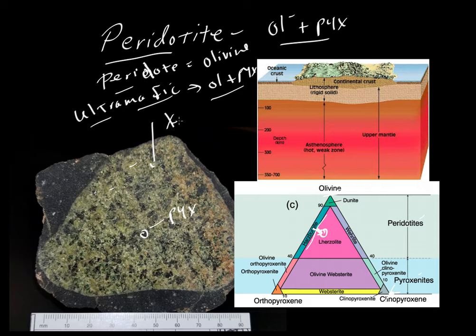Now, I'm calling it a xenolith. This is a foreign rock. Foreign to what? So xeno means foreign, lith means rock. It's foreign to this guy here that is the carrier. That carrier is basalt. And that comes to the next part of peridotite.